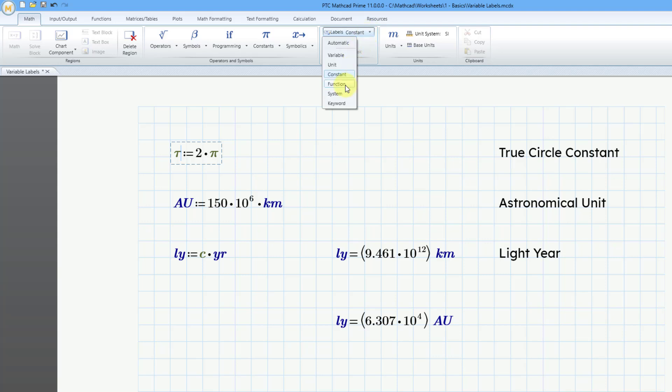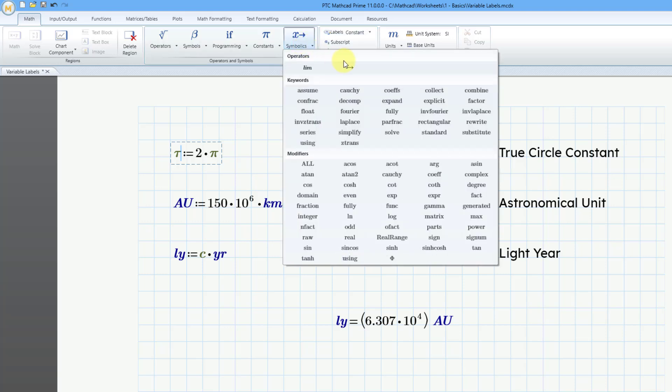Actually, let me select one of the regions again. For example, you have the choice here for function. When you are defining functions, it gets that label. Also system, those are for things like origin or tolerance. And then keyword, they're used in things like symbolic evaluation. So here we have some of our different keywords that are set up.